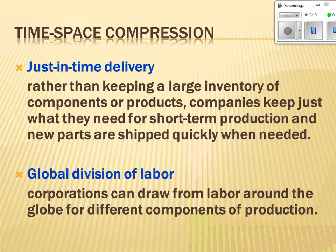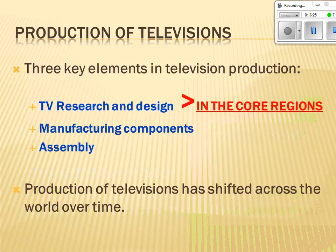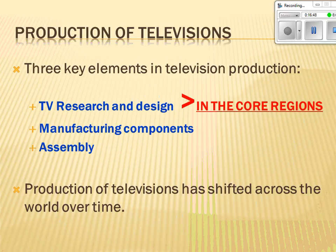We have our global division of labor where corporations use people from all over the world in the production process. For televisions, three key elements are research and design, manufacturing, and assembly. Research and design is done in the core regions, but manufacturing and assembly are done in peripheral or semi-peripheral regions. Core countries use cheap labor in peripheral countries to manufacture and assemble, meaning core country jobs are now in the tertiary, quaternary, and quinary sectors of the economy.